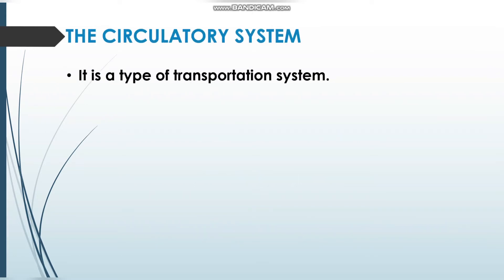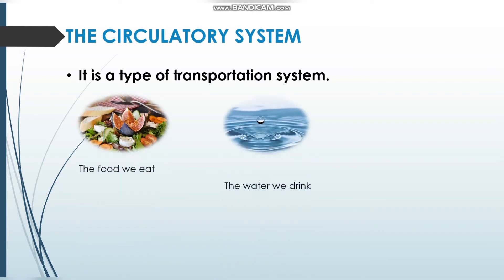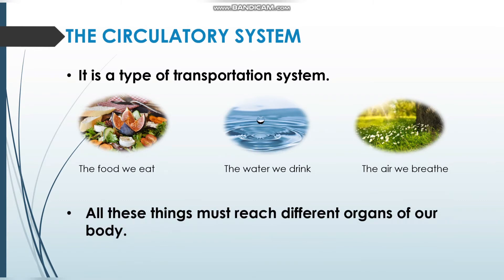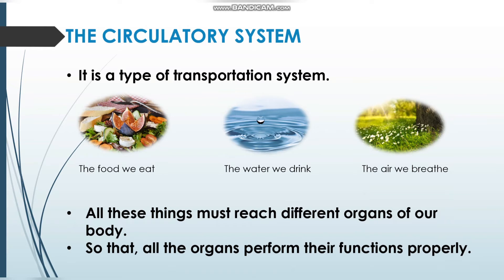This circulatory system is a type of transportation system. A transportation system is when we carry certain things from one place to another through vehicles or any other source. Similarly, in our body, the food we eat, the water we drink, and the air we breathe must all reach different organs so that they perform their functions properly. This all happens with the help of the circulatory system.